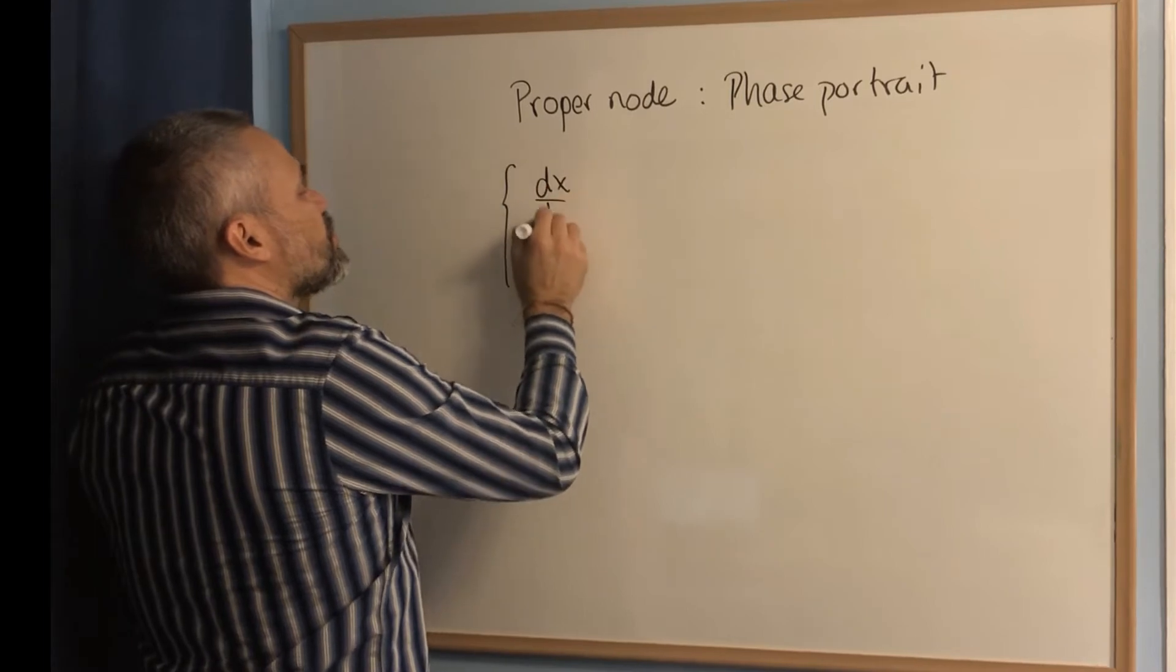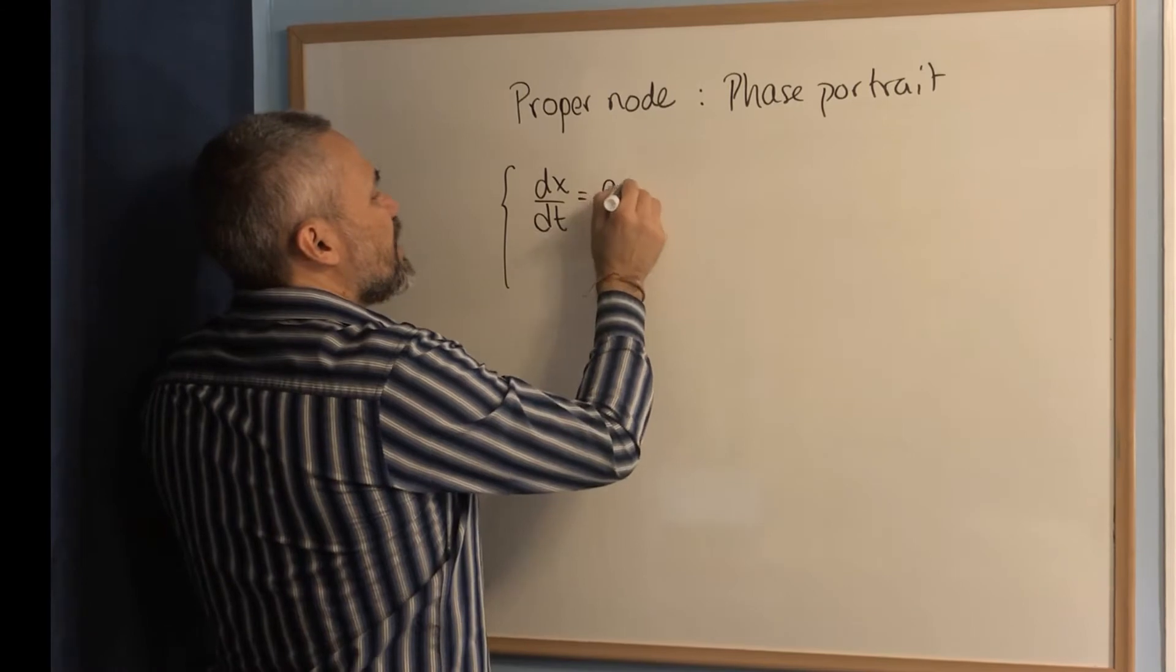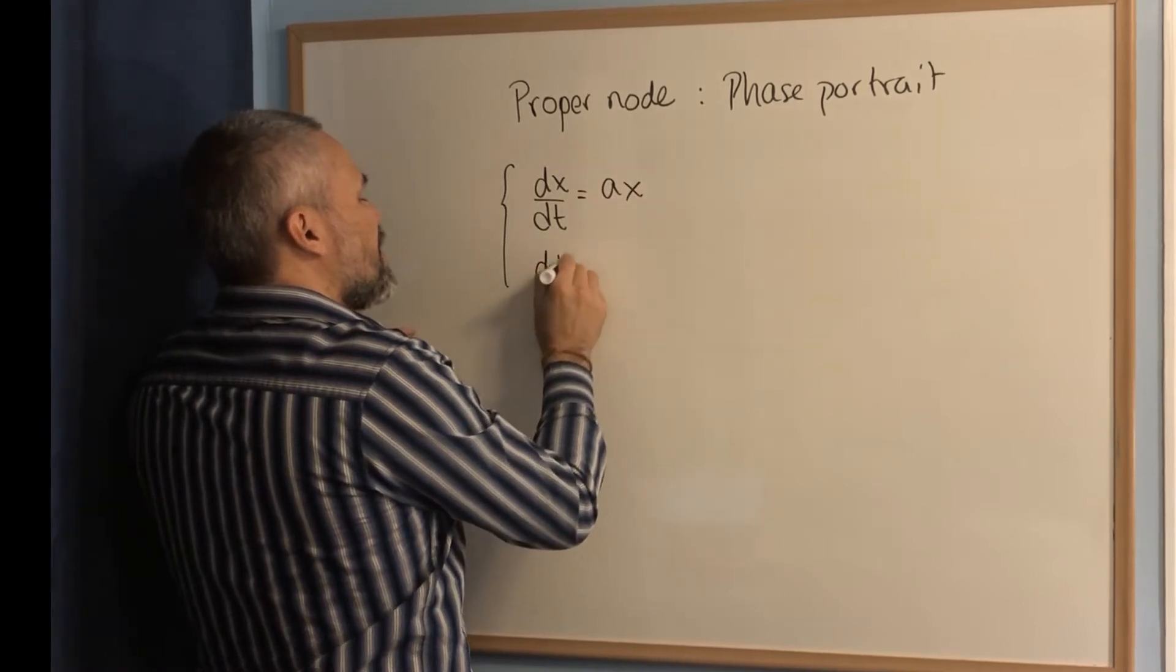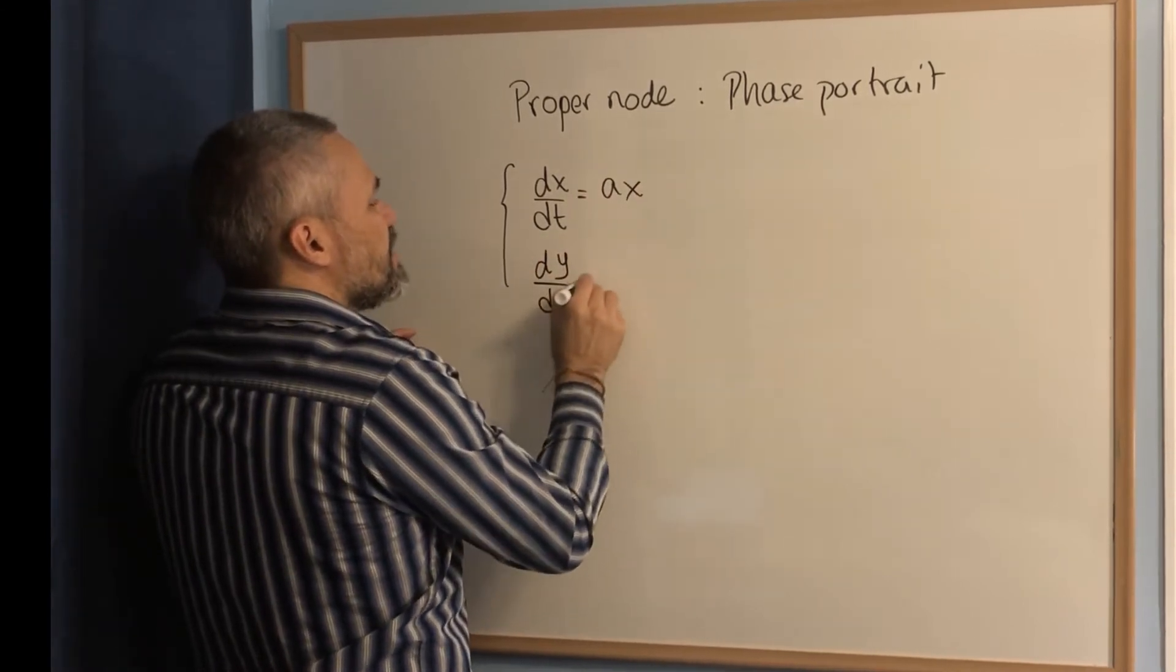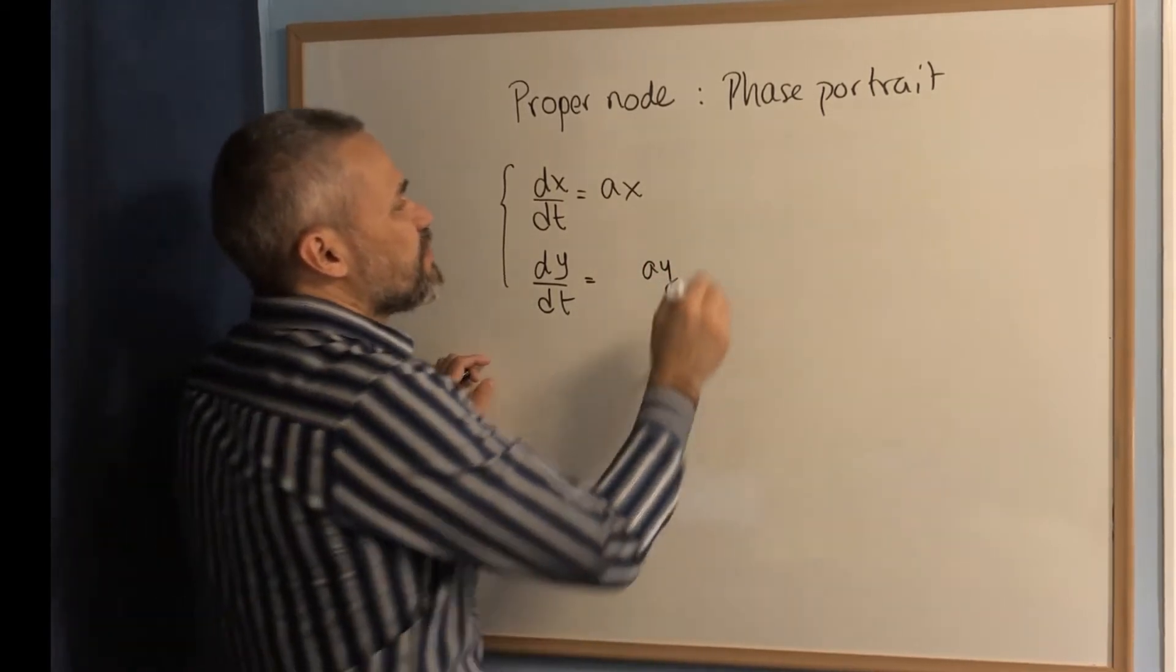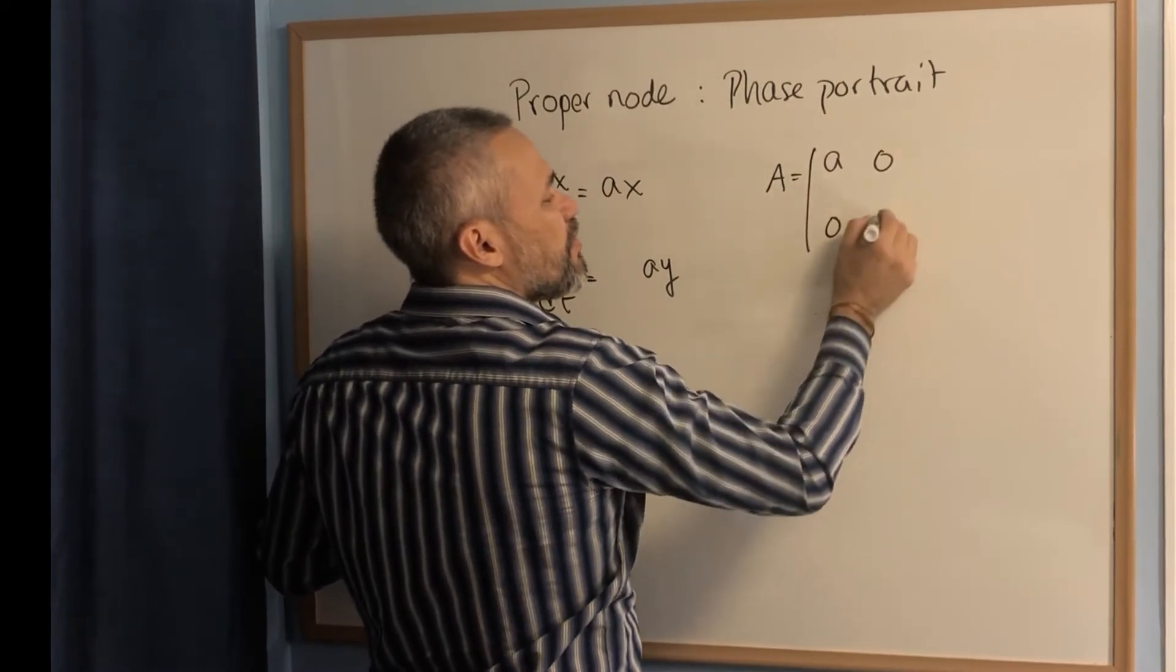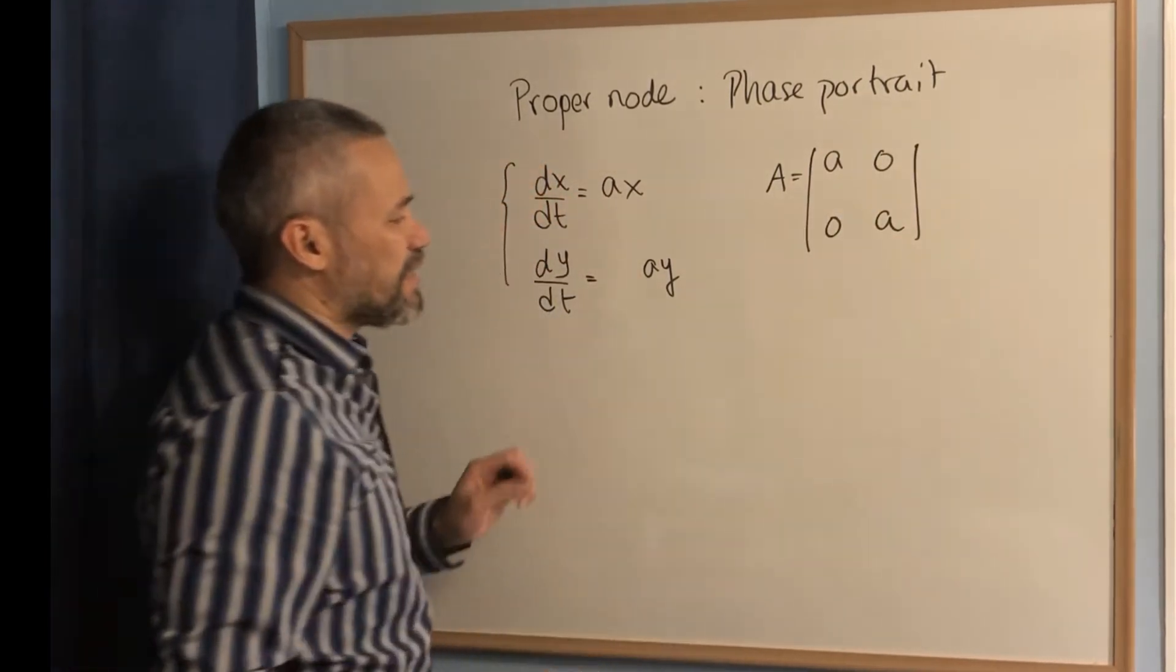If you have a proper node, it's because dx/dt is equal to ax and dy/dt equal to ay. That means that the matrix of the system is like a, zero, zero, a. It's a diagonal matrix.